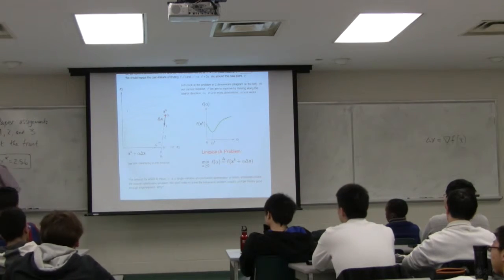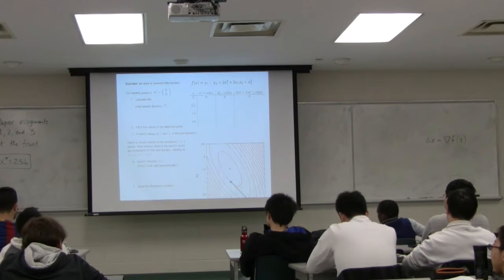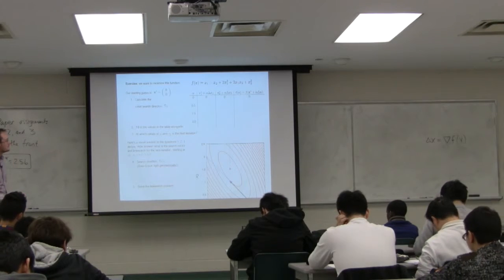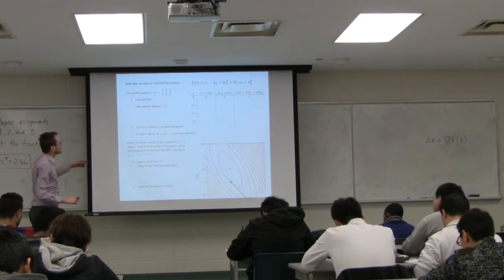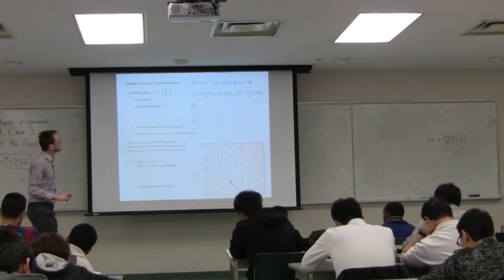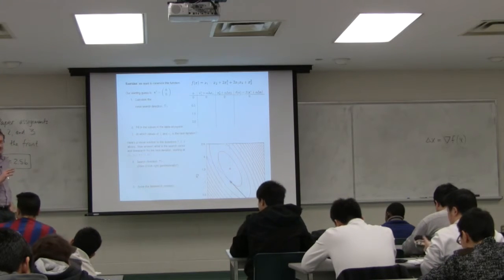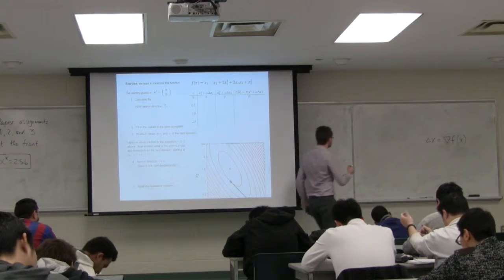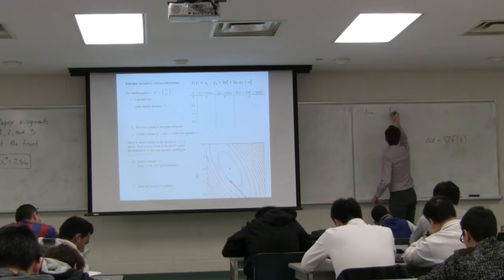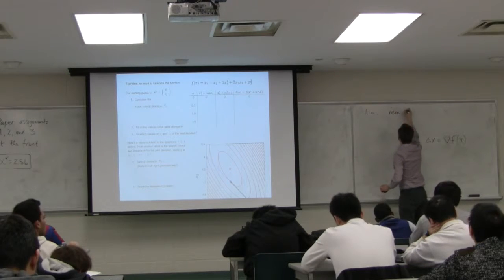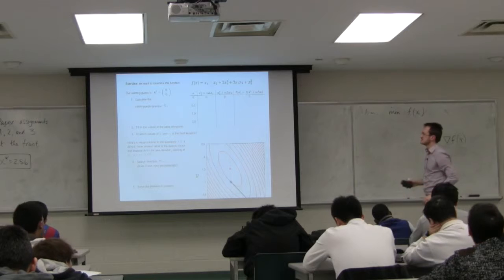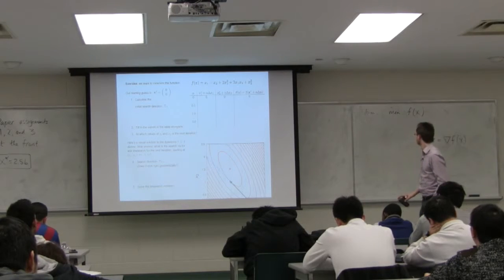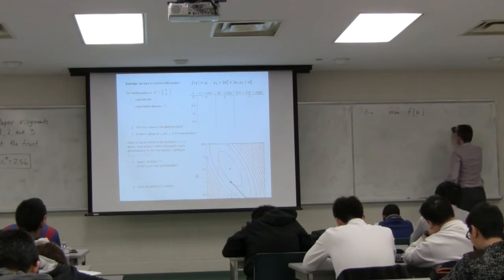Let's take a look at this with an exercise. Here's a function f of x at the top of the page, and we're going to start at the simplest point, the (0, 0) point. The first step: we're trying to minimize this function f of x, so find the search direction that we're going to move from starting at (0, 0). Here's a geometric picture further down the page, but you could do this analytically. I'll give you some time to do that.